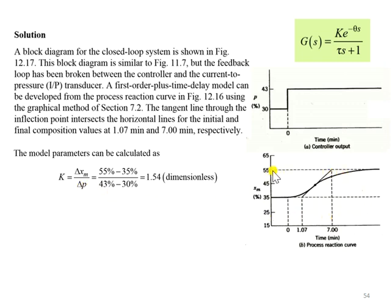...we can see the output changes from 35% up to 55%. This reaction is due to a step change from 30 to 43. By dividing those values, we can have the process gain K is equivalent to 1.54.